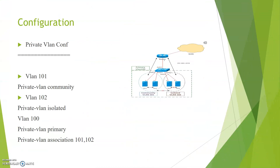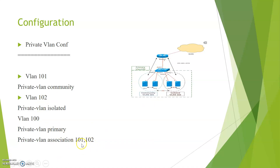Now let us discuss the private VLAN configuration. First, define the VLANs: 'vlan 101 private-vlan community' for the community VLAN, 'vlan 102 private-vlan isolated' for the isolated VLAN, and 'vlan 100 private-vlan primary' followed by 'private-vlan association 101, 102' — associating both VLAN 101 (community) and VLAN 102 (isolated) to the primary VLAN 100.